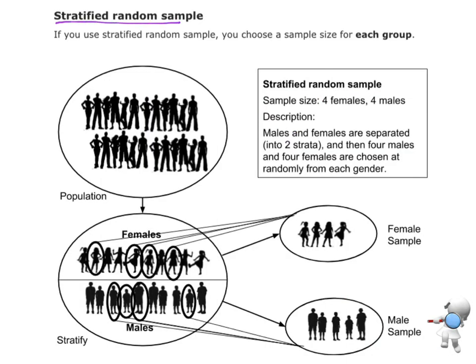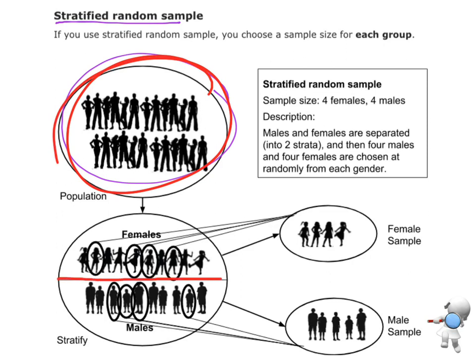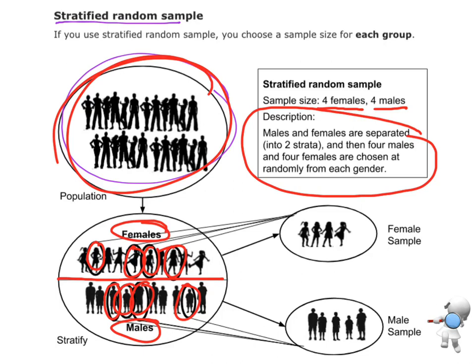The other type is stratified sampling. With stratified, we start with the overall population and then separate and split that population up. For example, I might split it into females on one side and males on the other. I then take a sample within the females and similarly take a simple random sample of the males. When reporting my sample size, I need to say what the sample size is for the females and what it is for the males, because they may not be the same. In this case, I would say I've got a sample size of four females and four males, and I describe how I separated the groups and took a random sample of four from each.